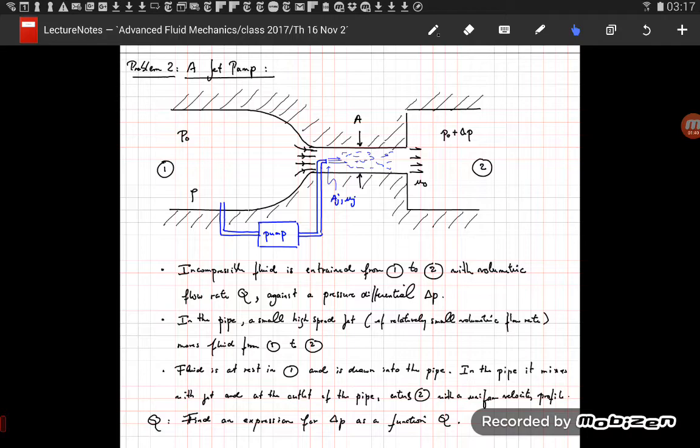So to make things a bit more interesting, we'll also assume that the pump works against a pressure difference between the two compartments. And so the pressure in compartment 1 will be P0, and the pressure in compartment 2 is P0 plus delta P.